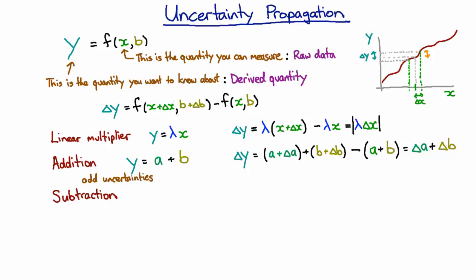So in fact, addition or subtraction, in both cases, you add the uncertainties. In other words, supposing I go forwards a meter, plus or minus a centimeter, and then I go backwards a meter, plus or minus a centimeter. Now, on average, I end up at exactly the same place. But there's uncertainty on my step forwards and another different uncertainty on my step backwards. And so those uncertainties are not going to cancel.